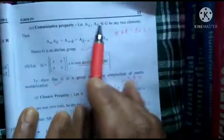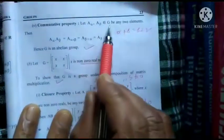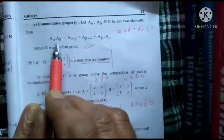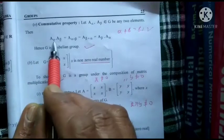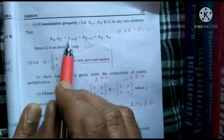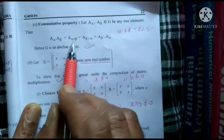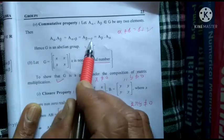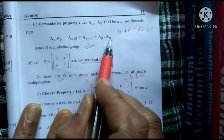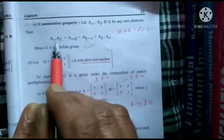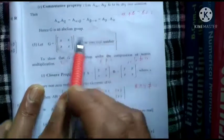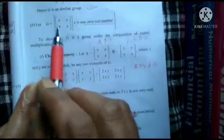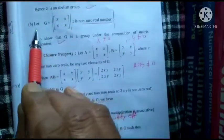Next is the commutative law. For A(α) and A(β) in G: A(α)·A(β) = A(α+β) = A(β+α) = A(β)·A(α). Therefore A(α)·A(β) = A(β)·A(α), so G is an Abelian group.